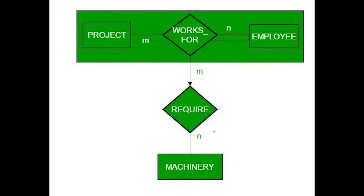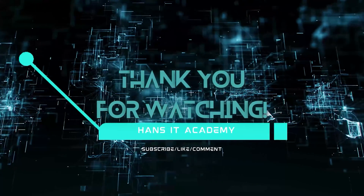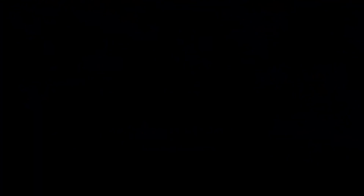Lastly, we have the aggregation concept, where particular relationship types are combined into a higher entity type. EER isn't able to represent relationships between entities and a relationship directly, so aggregation is utilized to represent relationships at a higher-level entity set. For example, an employee that works on a project is an entity that has been aggregated because they have their own relationship with machinery, and not all employees need a relationship with the machinery.